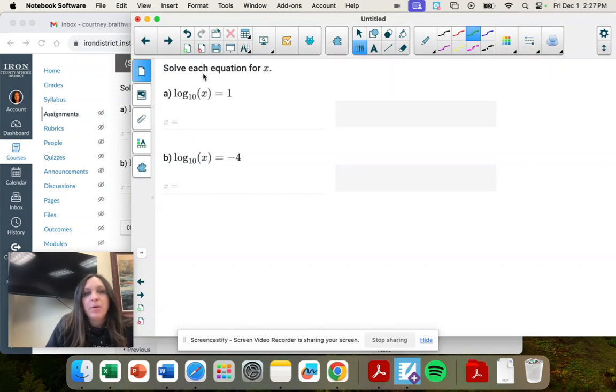So remember when x is just your argument, you take 10 to the power of 1 equals x. Another way to do it is to raise both sides to the power of 10.